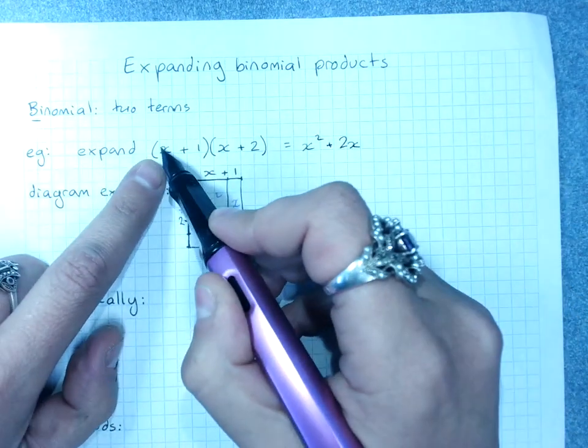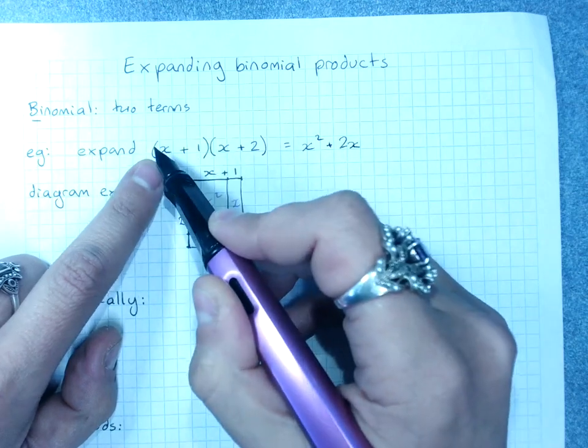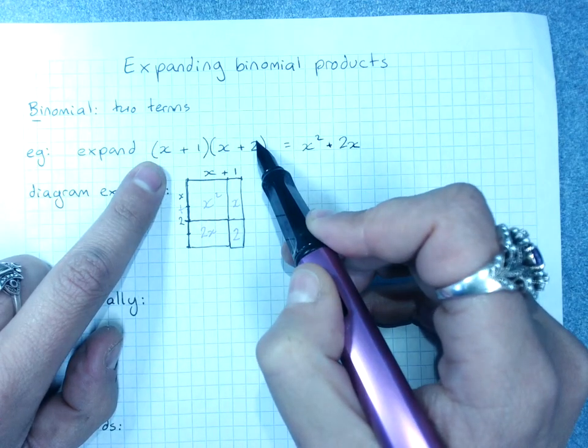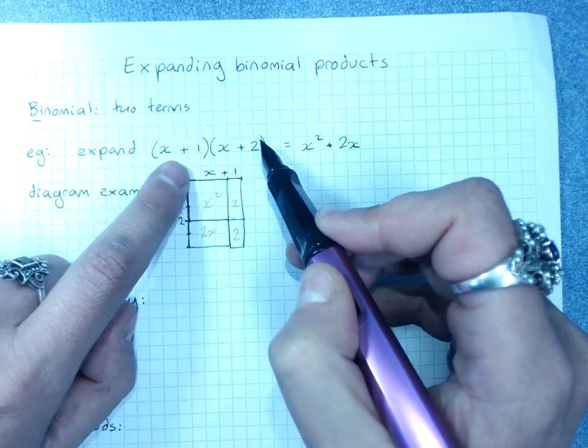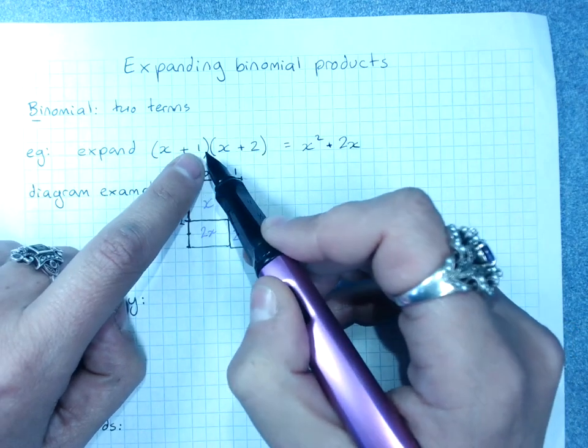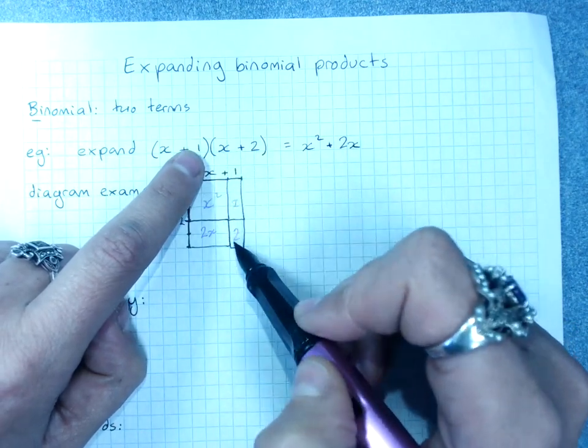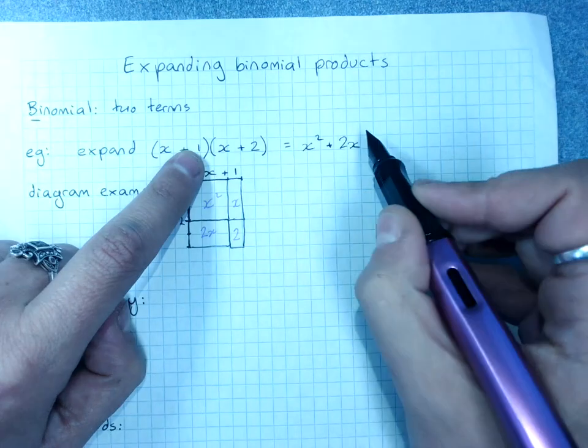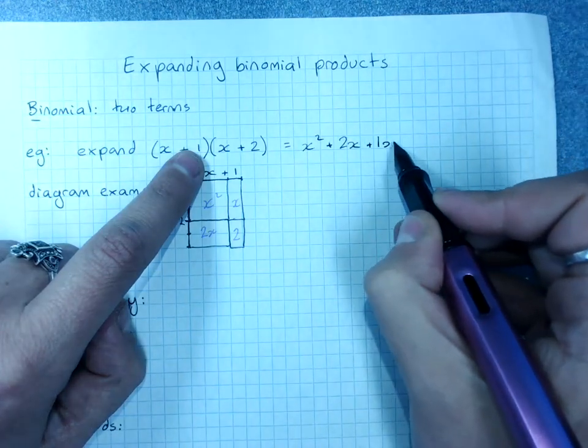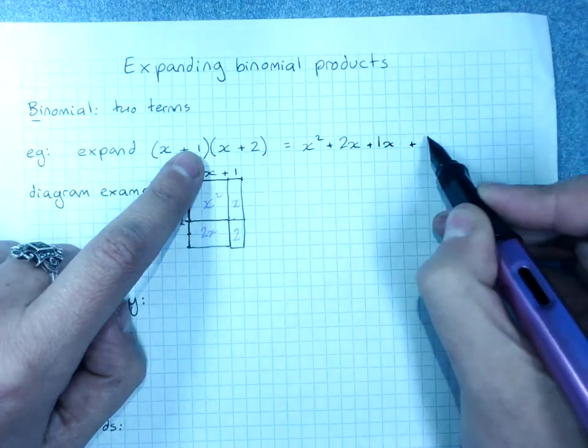So I did x times x, x times 2. Then I did the second term in the first bracket, 1 times x and 1 times 2. 1 times 2 is 2.